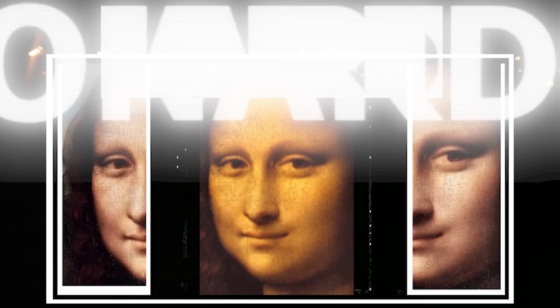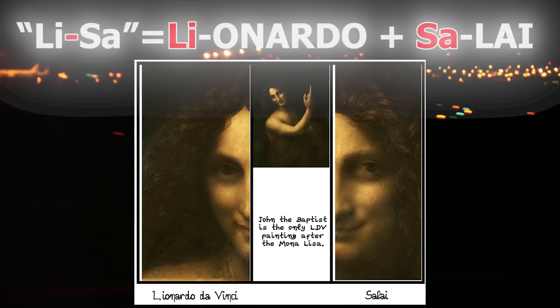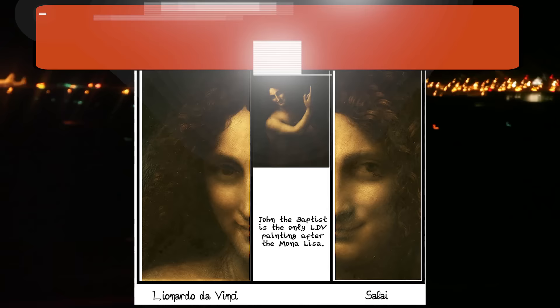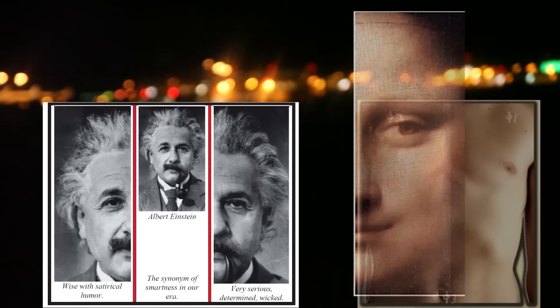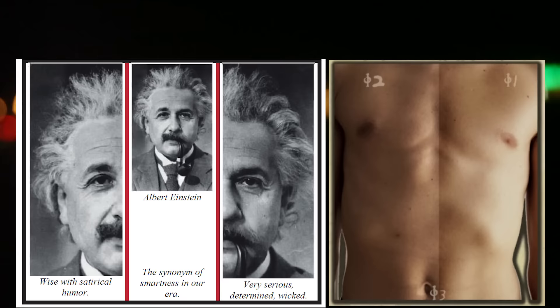And that is why Mona Lisa is Leonardo and Salai, united forever thanks to Da Vinci's magic. And if you look deeper behind his paintings, Da Vinci hid an incredible secret. Like the Mona Lisa, so are we split anatomically into two different halves. Simply compare your two half-faces and two half-bodies, as we did with the Mona Lisa.